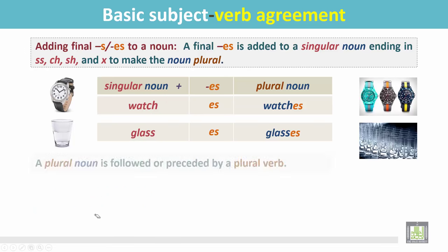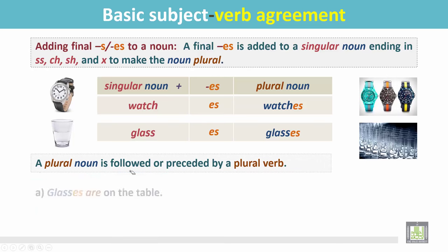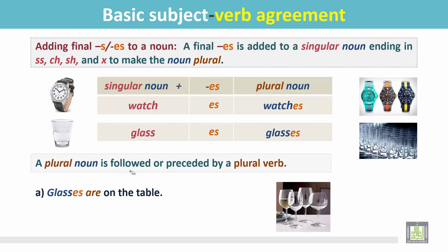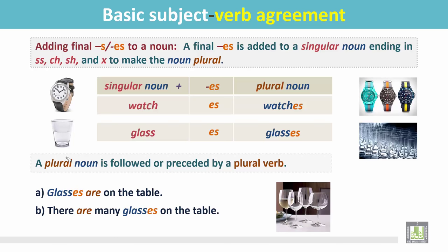A plural noun is followed by or preceded by a plural verb. For example: 'Glasses are on the table' — 'glasses' is a plural noun followed by the plural verb 'are.' We can also say: 'There are many glasses on the table,' where the plural noun is preceded by the plural verb 'are.'